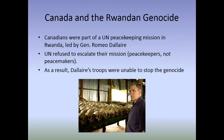Canadians were already part of a UN peacekeeping mission in Rwanda, led by Canadian General Romeo Dallaire. However, when tensions started to escalate, the UN did not escalate their mission. Peacekeepers are there to keep the peace - they're not peacemakers. They can only be effective if a truce already exists. They're often lightly armed and are not there to force peace upon groups. So when the genocide began, Dallaire and his forces felt they couldn't do anything to stop it.